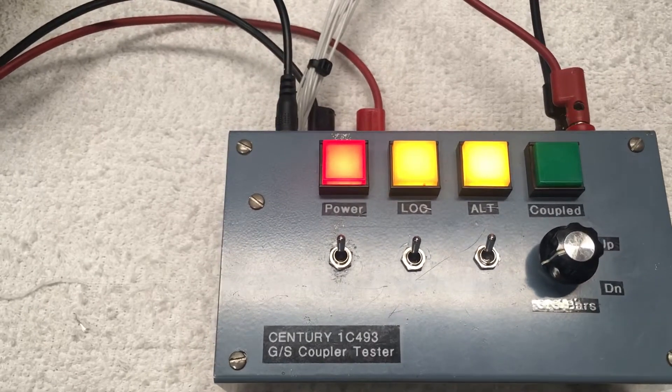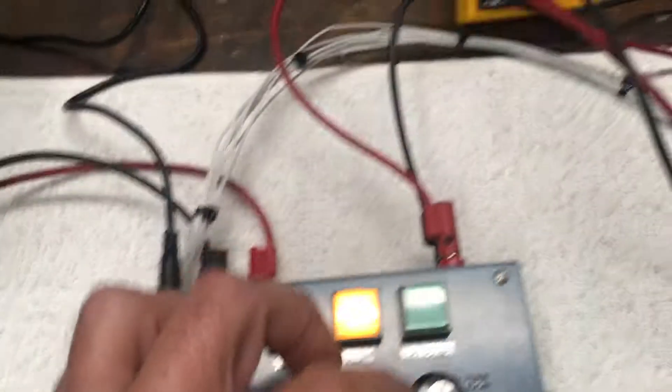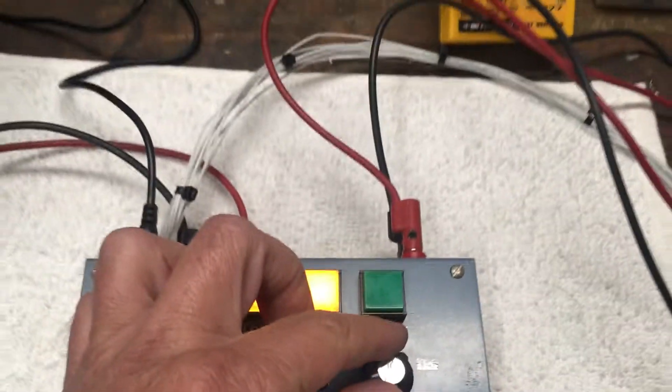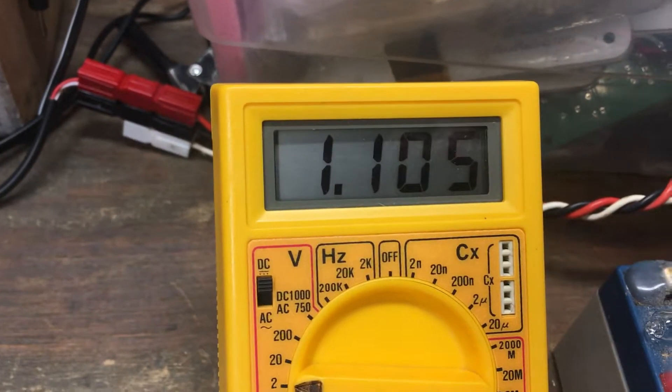So I'm coming up on about 20 seconds right about now. What I'm going to do is start bringing the glide slope bars down, and you'll notice the voltage is starting to decrease.